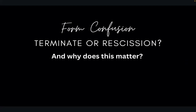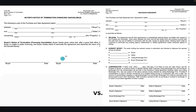Termination versus rescission — there is actually a really big difference between whether you should terminate or rescind a contract, and this is a big deal if you have any contingency protections left over for your buyer. I pulled up a random termination form here, and this is the rescission form next to it. The biggest difference is that one does not require both signatures and one of them does.